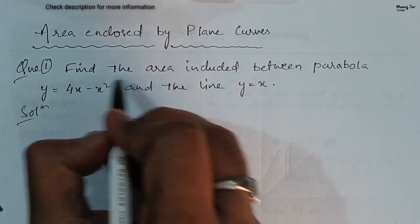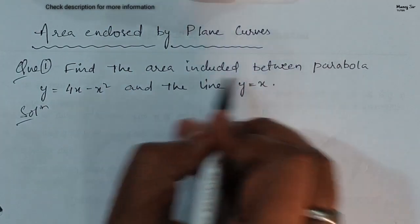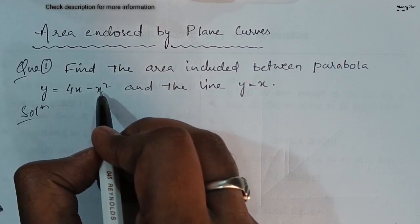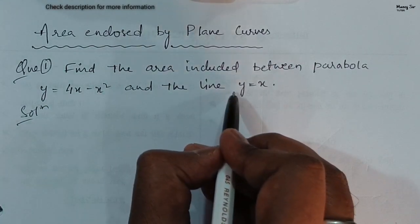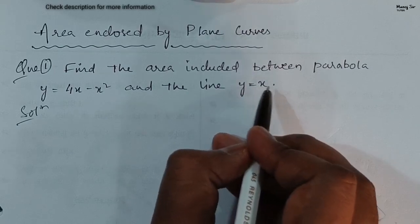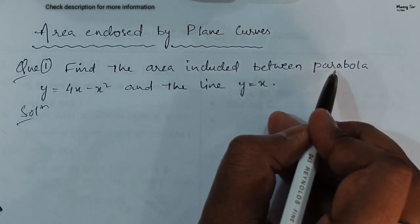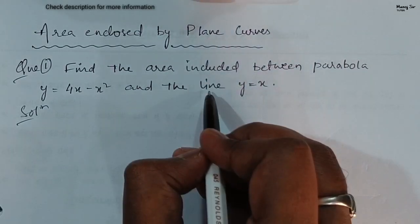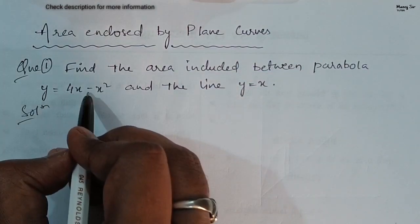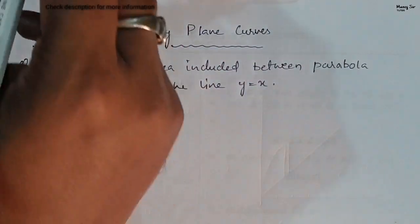The question says: find the area included between the parabola whose equation is y equals 4x minus x squared, and a line whose equation is y equals x. So here we have to find the area included between a parabola and a line.